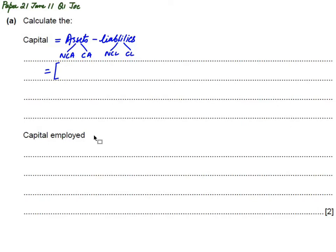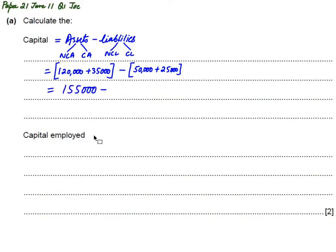In this question, non-current assets are worth 120,000 and current assets are 35,000, giving total assets of 155,000. Non-current liabilities (over one year) are 50,000 and current liabilities (due within a year) are 25,000, giving total liabilities of 75,000.